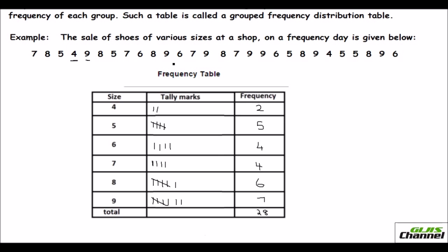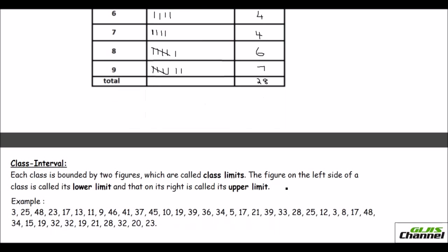Now find the total of these: two plus five is seven, plus four is eleven, plus four is fifteen, plus six is twenty-one, plus seven is twenty-eight. So the total is twenty-eight. If you count the number of shoes in the original data you will also find twenty-eight. If they match, you can be sure you haven't missed anything and your frequency table is correct. When you look at this table, at a glance you can understand the sizes sold ranged from four to nine, and how many were sold of each size — that gives you a clear picture. This is called a frequency table with tally marks.